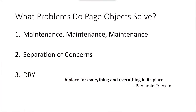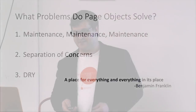What are we trying to solve with page objects? Maintenance. We're trying to make sure that the amount of time you spend dealing with failures and changes in the code are not taking up too much time. Separation of concerns — making sure things are where they need to be and drive proper abstractions. Place for everything and everything in its place — apparently said by Benjamin Franklin, because everything interesting said in the late 18th century was said by Benjamin Franklin.